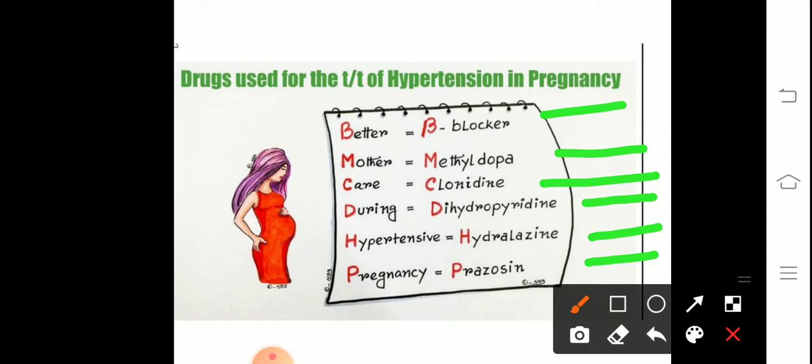So your question can come on this: what are the drugs which are used in hypertension when a female is pregnant? You will be given four drug examples, so with this mnemonic you can easily mark the odd one out.